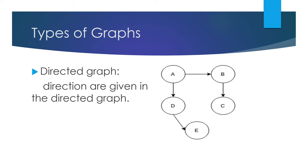Next are the types of graphs. First is the directed graph. In a directed graph, directions are given to the edges. Here a is directed towards b and b is directed towards c. A is directed towards d and d is directed towards e. This is about directed graph.